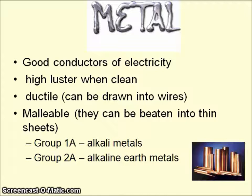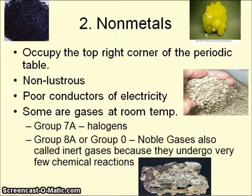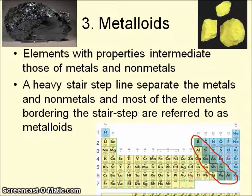The second major group of representative elements are the non-metals. These occupy the top right corner of the periodic table. They are not lustrous — they don't have that metallic sheen — and they are very poor conductors of electricity; they don't share their electrons very readily. Some are gases at room temperature. These include Group 7A, the halogens, and Group 8A, also referred to as Group 0 — the noble gases. Noble gases undergo very few chemical reactions; for the most part we don't deal with them much in chemistry because they are inert and don't react with anything.